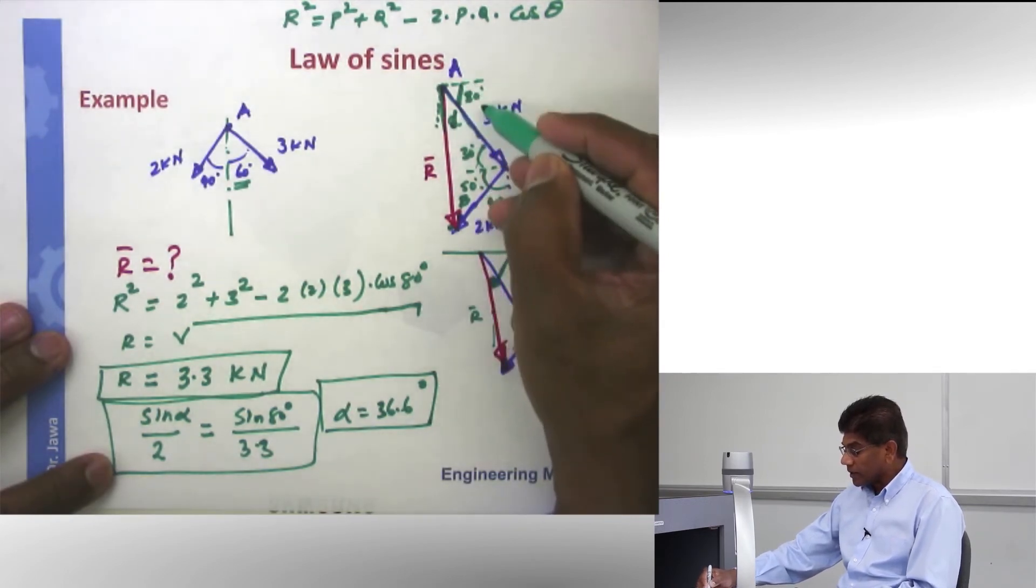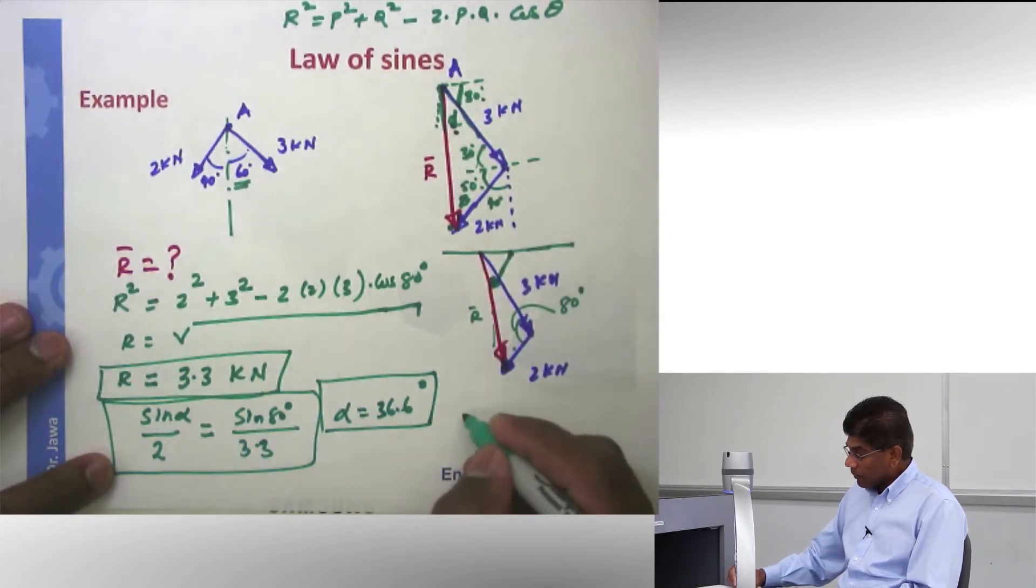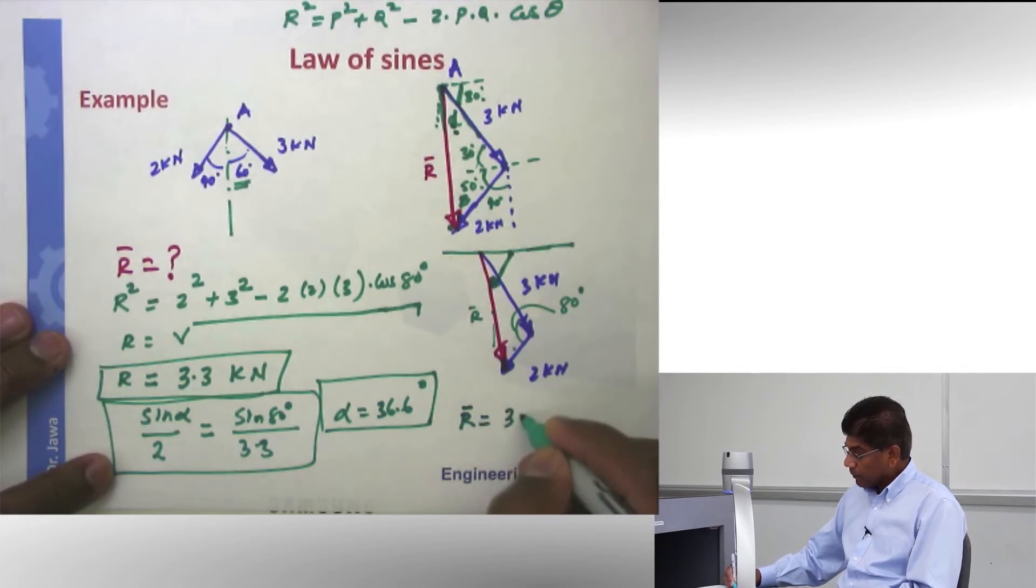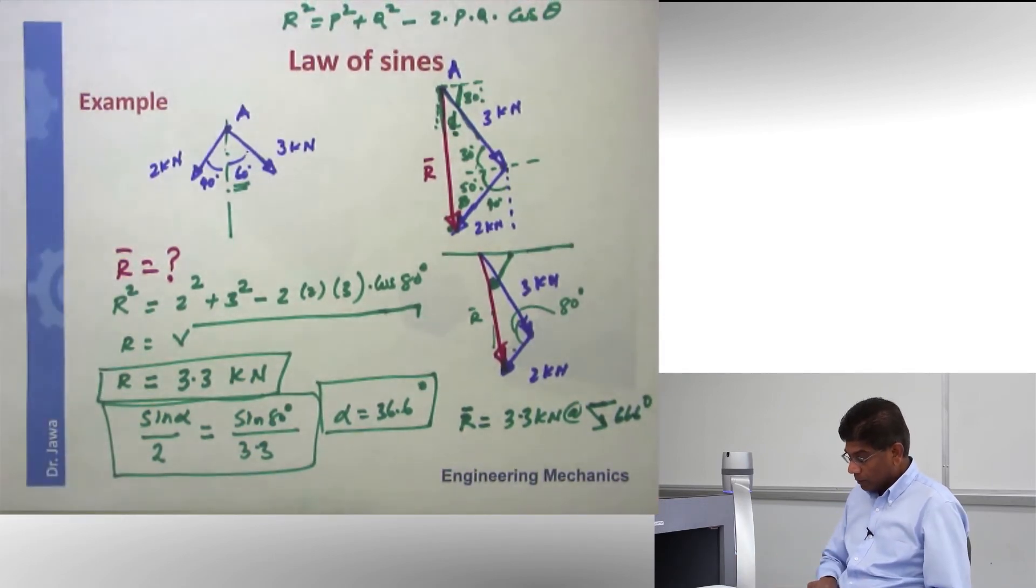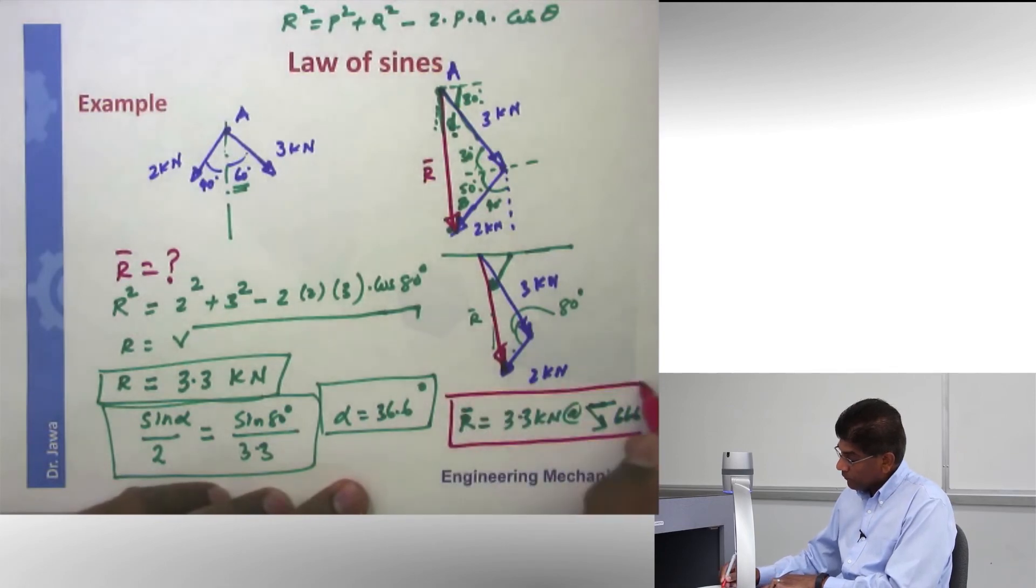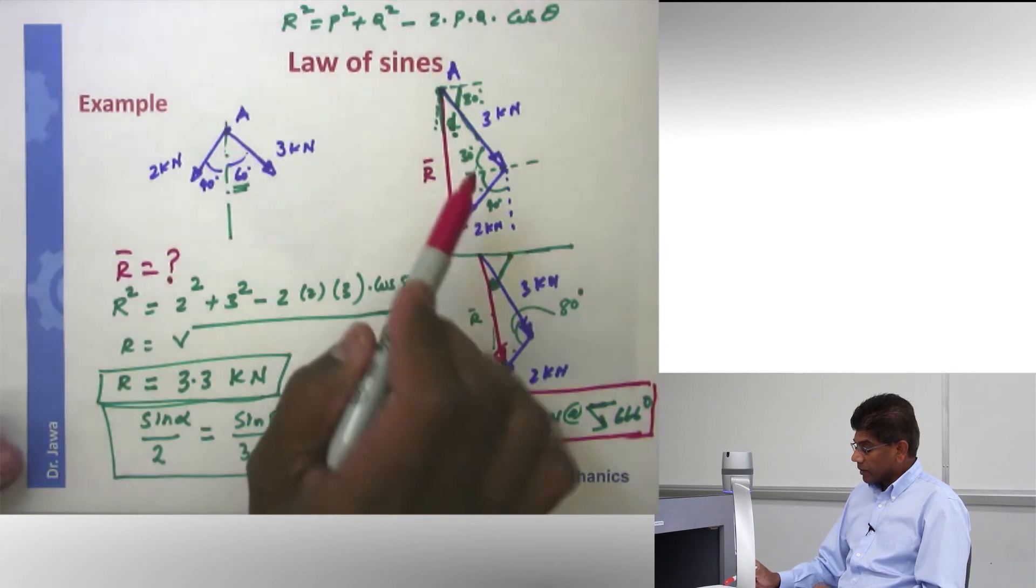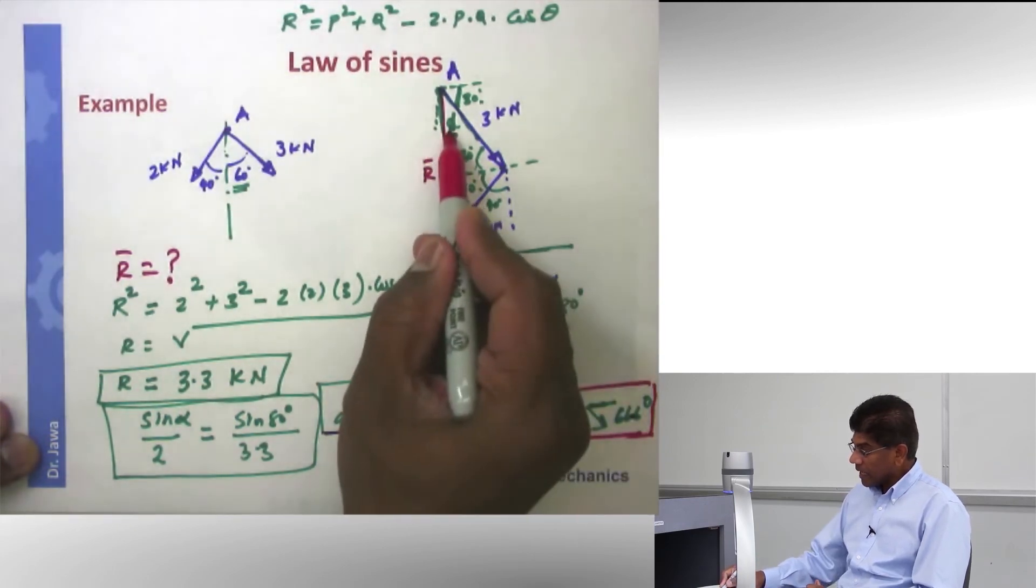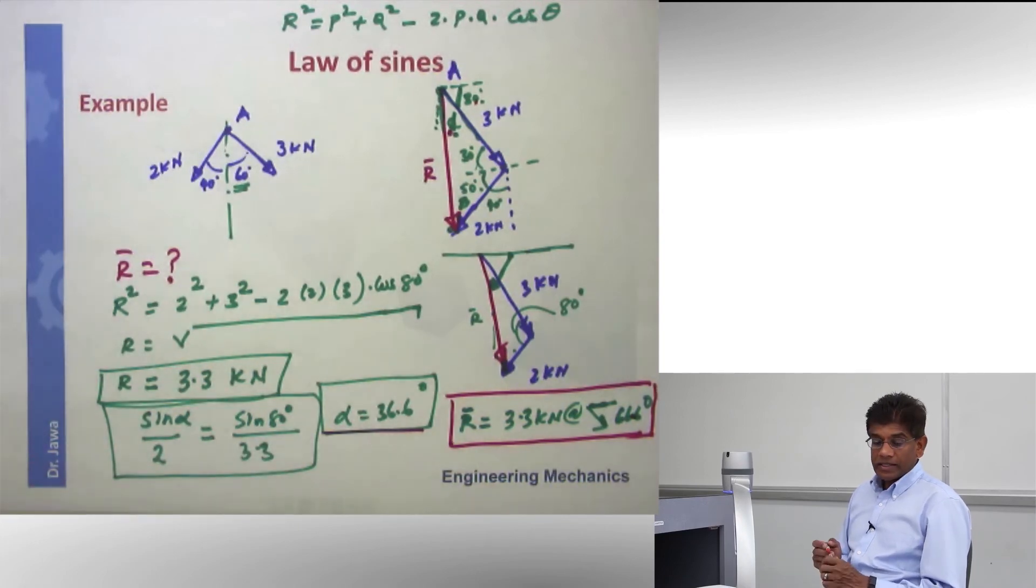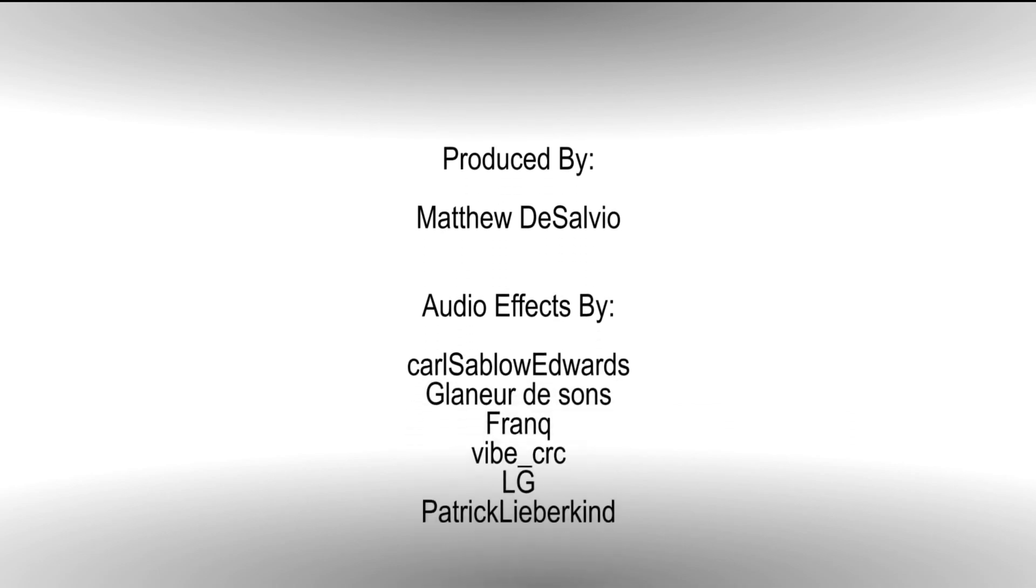So alpha is 36.6 degrees. And therefore, the total angle that we want to refer is 30 plus 36. So my value of R, the final answer is 3.3 kilonewtons at, and I can specify this angle as 66.6 degrees. And that would complete the solution process of finding the resultant vector by adding p and q. I hope this is clear. This is 66.6, and we got that by finding this alpha and adding it to 30 degrees. So that completes an example where we are using both law of sines and law of cosines to find the unknown side and the unknown angle. I hope this is helpful. And there are numerous problems in the book, and I suggest you try some of them.